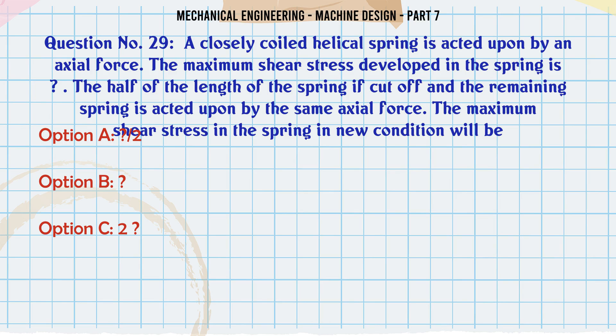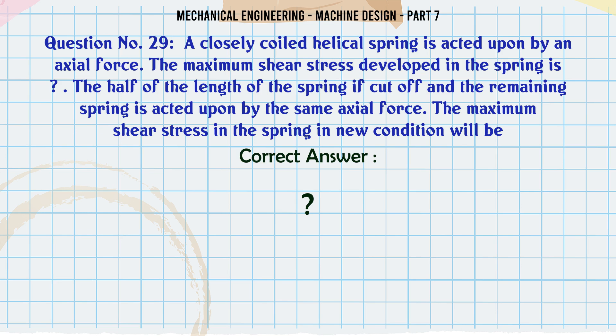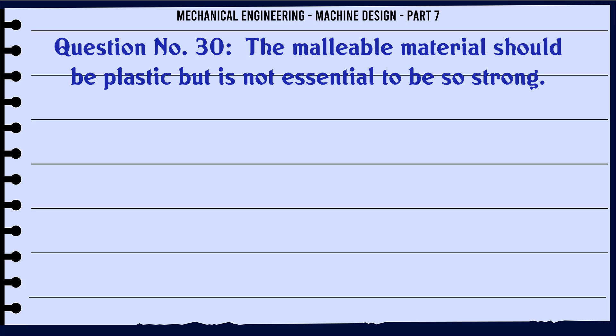A closely coiled helical spring is acted upon by an axial force. The maximum shear stress developed in the spring is τ. If half of the length of the spring is cut off and the remaining spring is acted upon by the same axial force, the maximum shear stress in the spring in the new condition will be: the same τ. The correct answer is: τ (same as before).